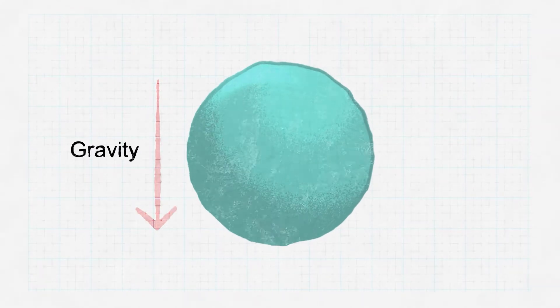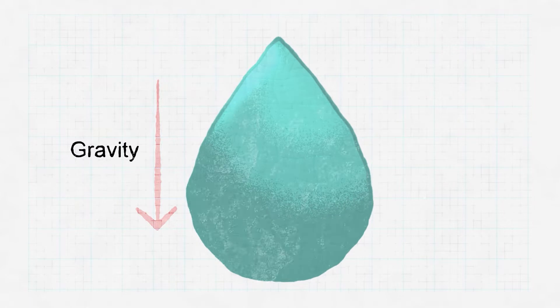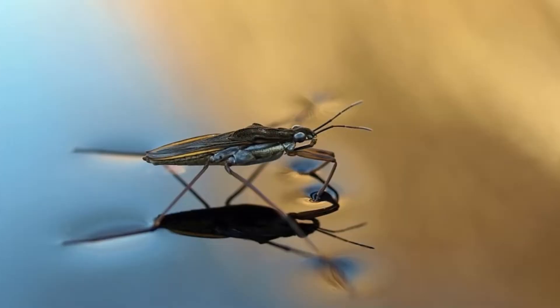Then as the water accumulates more water molecules, gravity and its weight start to drag it downwards and thus it forms the classic teardrop shape we're so accustomed to seeing. Basically, what I've just described is called surface tension — which is effectively how strong the forces are that attract molecules together in comparison to the forces that want to break them apart. The force that attracts molecules together is called cohesion and is exactly the reason why some bugs like the water strider can literally walk on water.